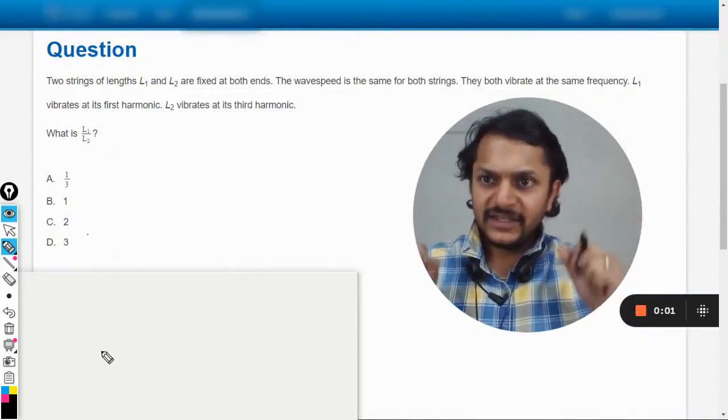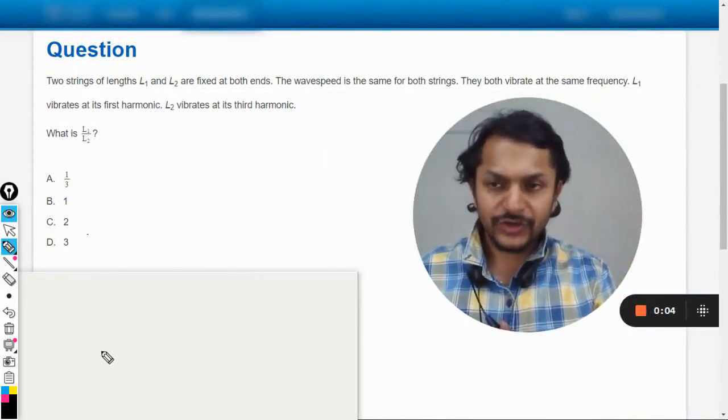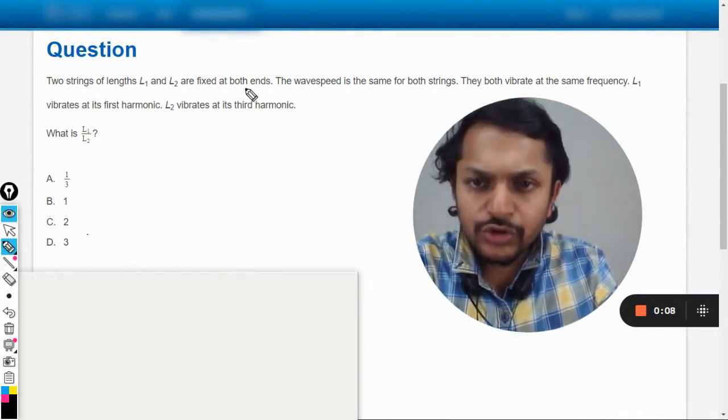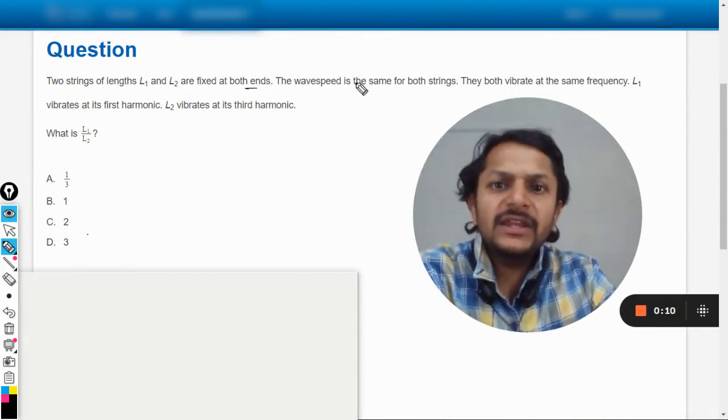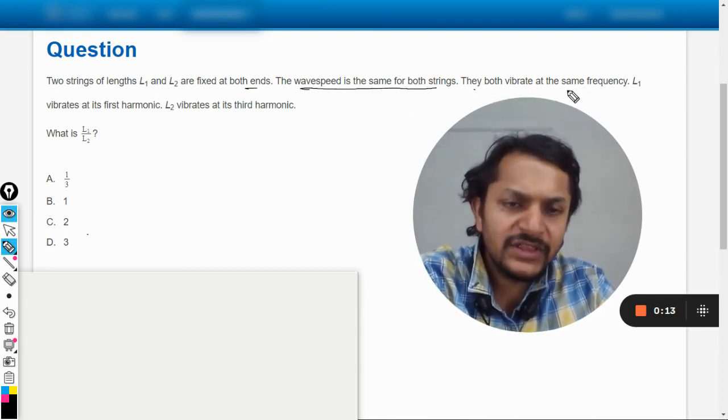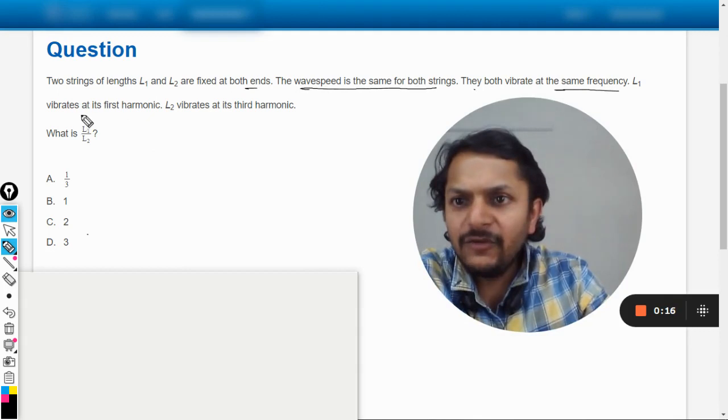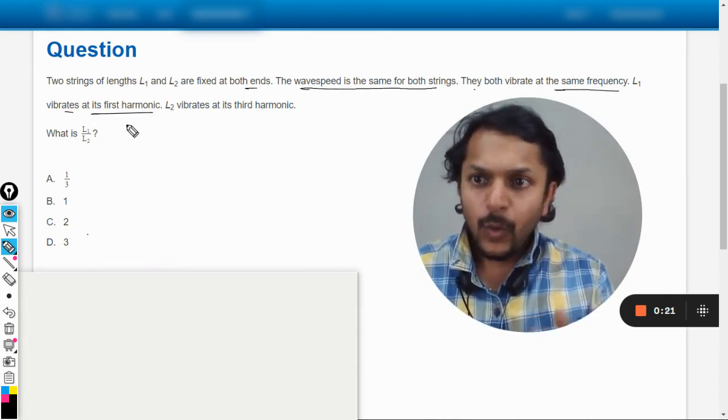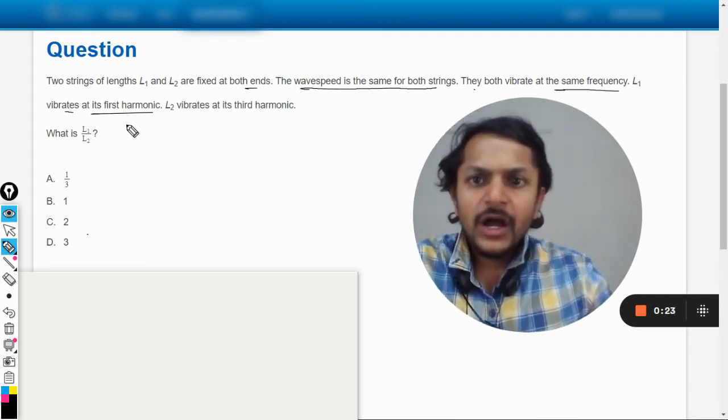Okay dear students, let us see how we're going to do this question. Two strings of length L1 and L2 are fixed at both ends. The wave speed is the same for both strings. They both vibrate with the same frequency. L1 vibrates at its first harmonic and L2 vibrates with its third harmonic. What is L1 by L2?